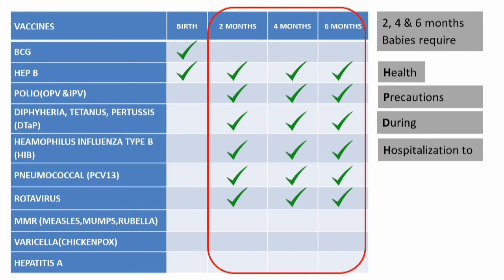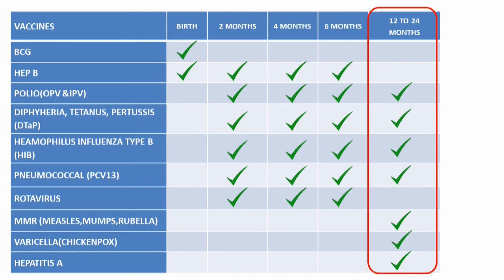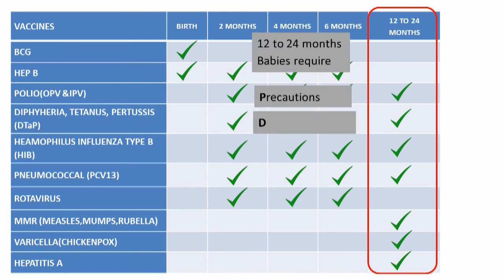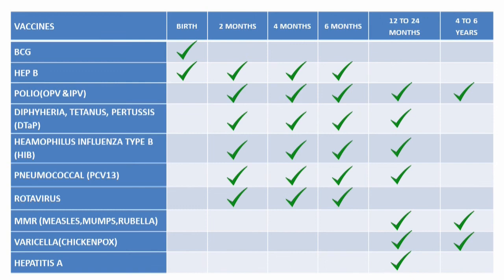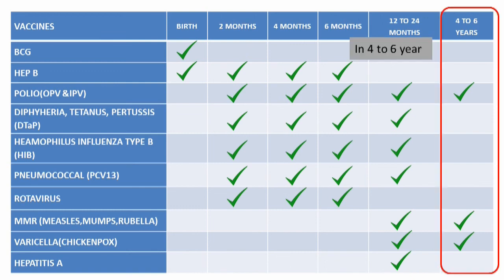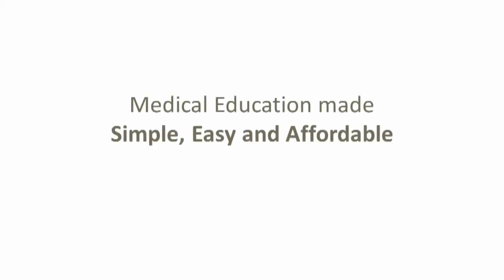For 12 to 24 months, seven vaccines are given. The mnemonic is: "12 to 24 month old babies require precaution during hospitalization to prevent measles, varicella, and hepatitis A virus." For four to six years, the mnemonic is: "Policies make variations." There you have the pediatric immunization mnemonic — isn't it simple and easy?